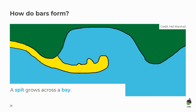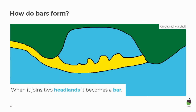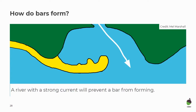Let's have a look at how bars form. Here's our spit that we've looked at earlier. The spit grows across a bay. When it joins two headlands, it becomes a bar — it's created a bar of sand across that bay. The area of water behind it is called a lagoon. If there's a river with a strong current coming through that bay, the bar is unlikely to form, because that strong current is going to wash any of the deposited material away. So you tend to only have bars forming if you either don't have a river coming into the bay or if it's very slow.